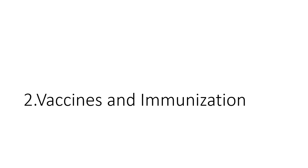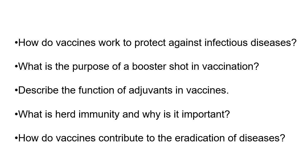Next section: vaccines and immunization. There are various vaccines — polio, smallpox, rabies — and you may get questions like how a polio vaccine is developed, or what are DPT and BCG vaccines, their full forms, and which diseases they treat. How do vaccines work to protect against infectious diseases? Vaccines stimulate the immune system to recognize and combat pathogens by introducing an antigen that mimics the target microorganism, prompting the body to develop immunity.